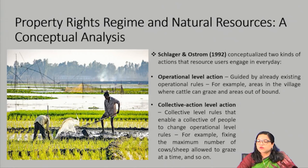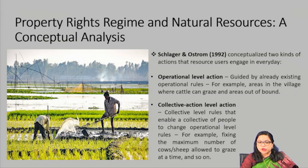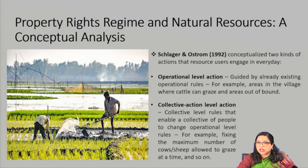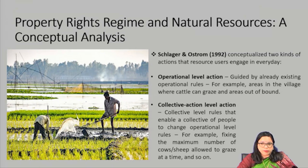Collective choice rules determine actions undertaken by a collective of people. Going back to the earlier example, a collective choice rule can change an operational rule — specifying the number of cattle that one can graze on the land, who can use the land and when. Operational rules affect the immediate arrangement while collective choice rules have the potential to shape future operational rules and the use of resources. Together, collective choice actions and rules affect the functioning at the operational level.